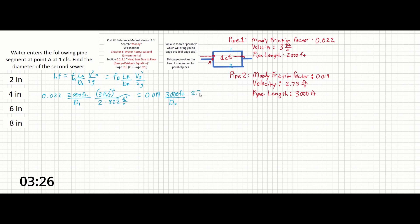2.75 feet per second squared over 2 times 32.2 feet per second squared. Oops that should have been feet per second squared as well.